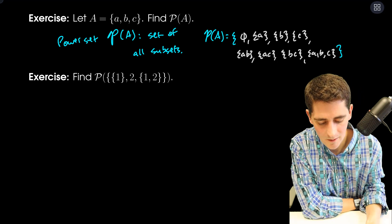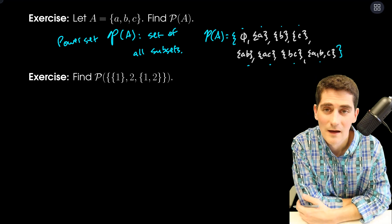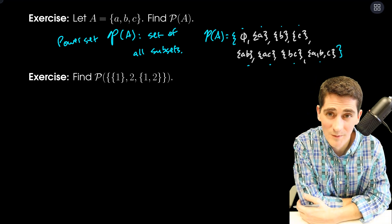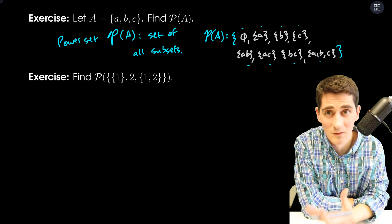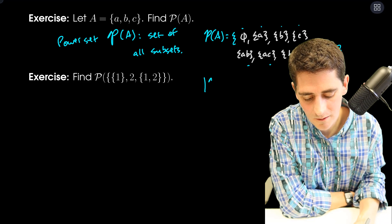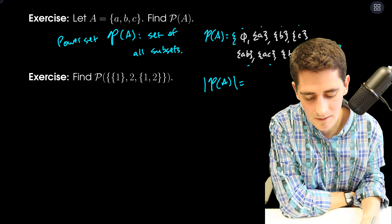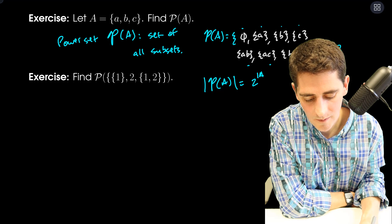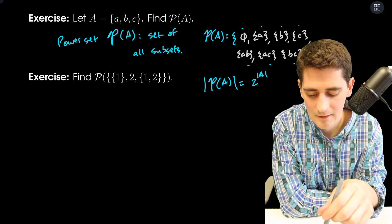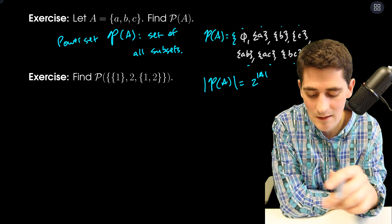Notice that we have how many things? One, two, three, four, five, six, seven, eight. I could have predicted that earlier — the power set has a cardinality of two to the power of whatever the cardinality of A is. So here, A had three things in it, so I knew the power set would be two cubed: eight elements.